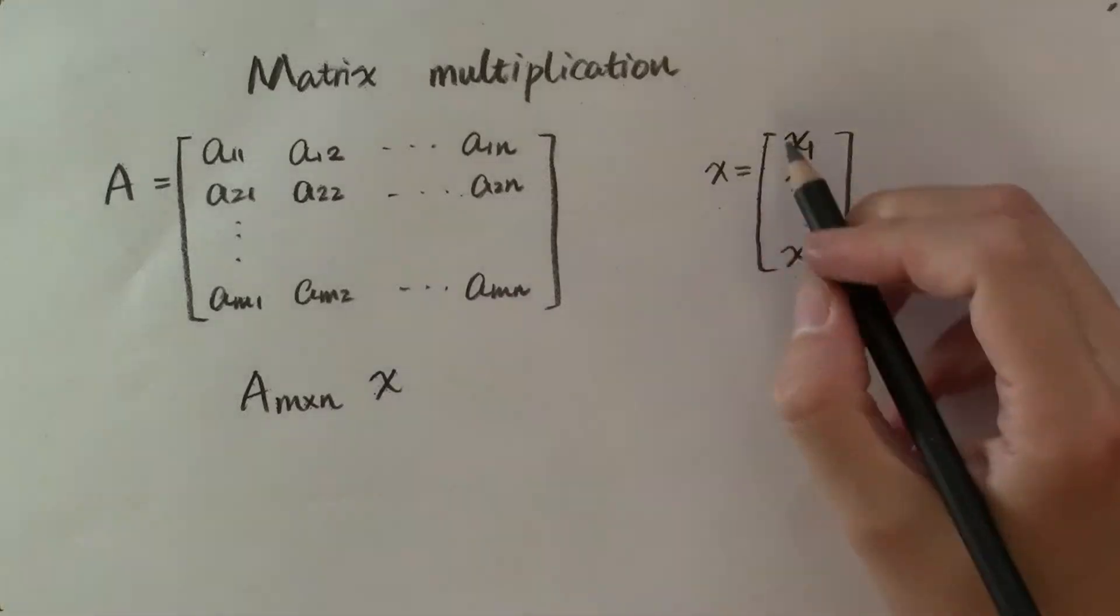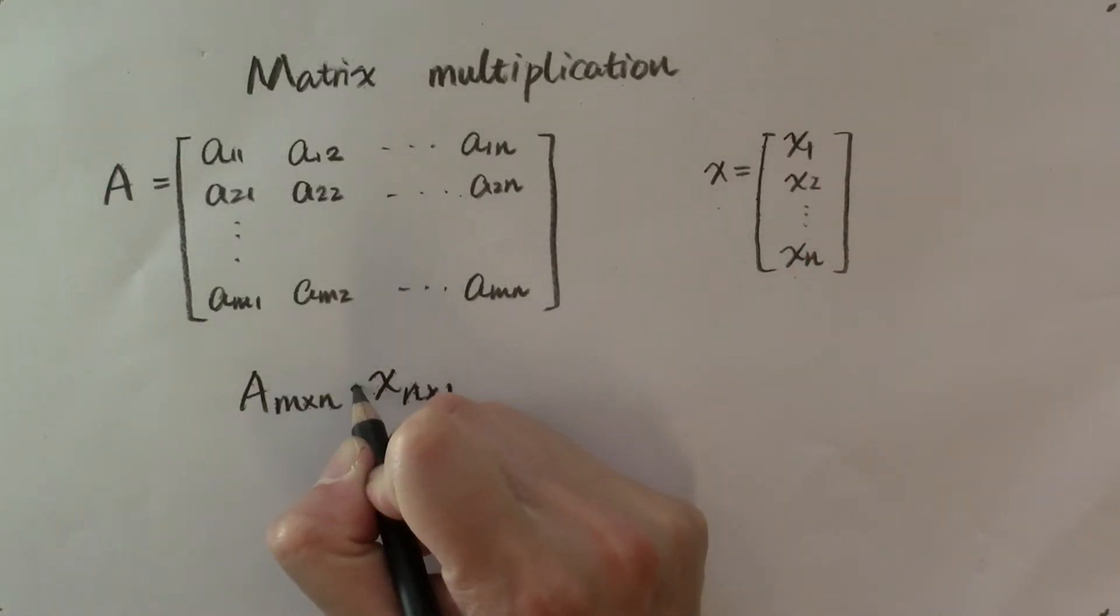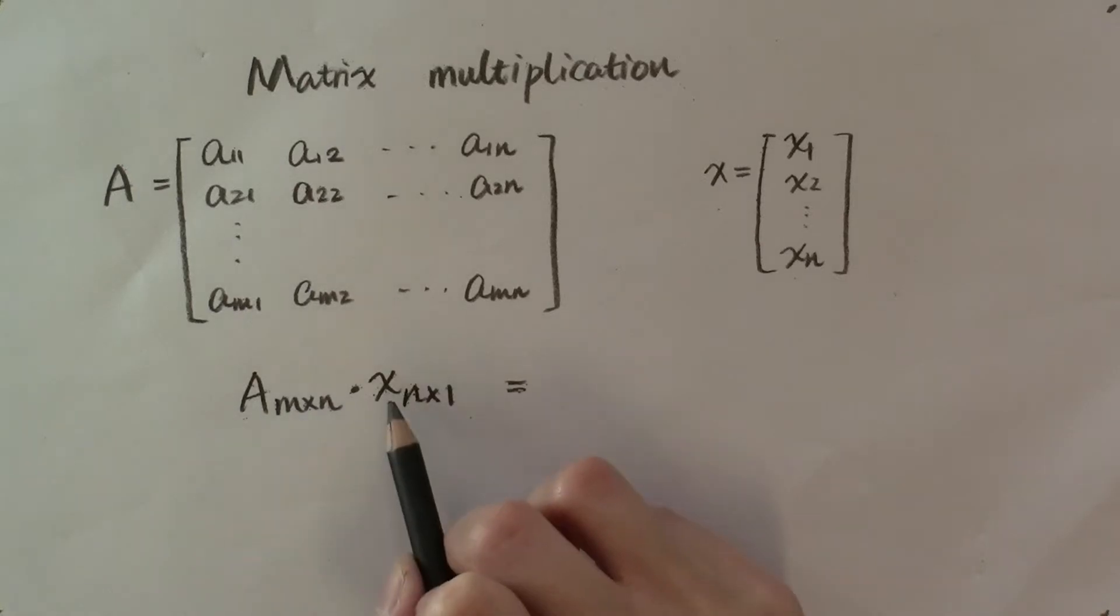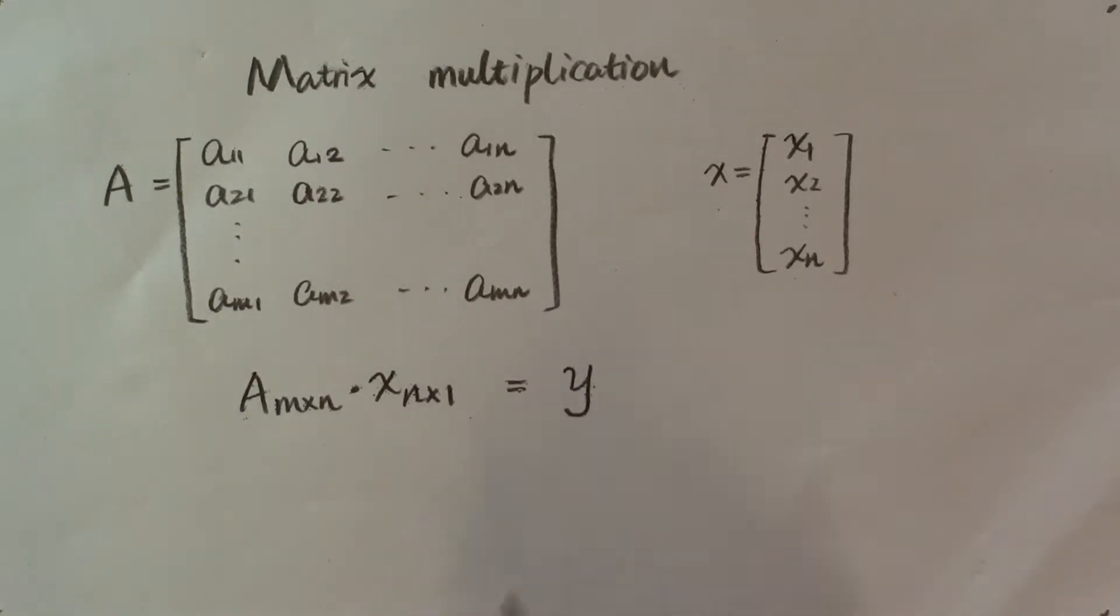And we have a vector x that is n by 1. What is the product of A and x? A matrix multiplying a vector is going to be another vector. And the dimension of this product is going to be m by 1.